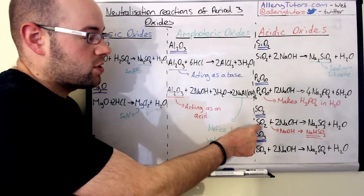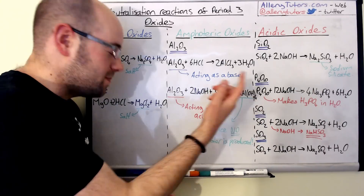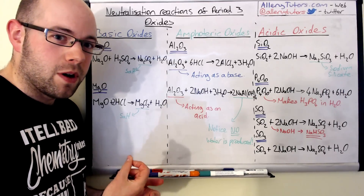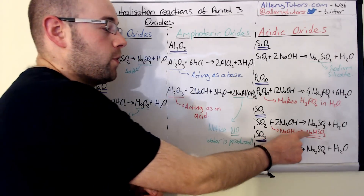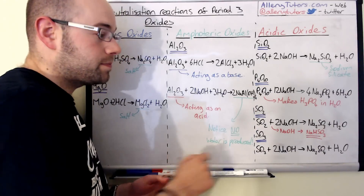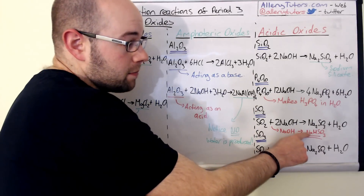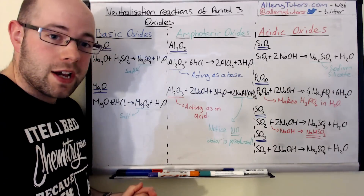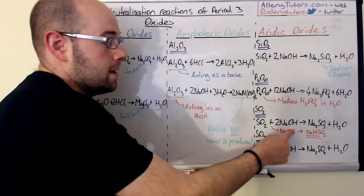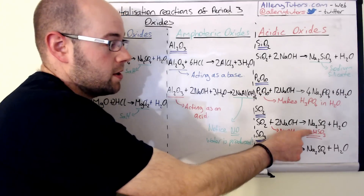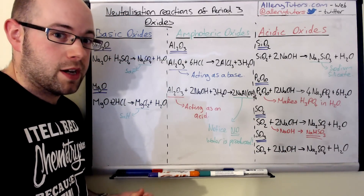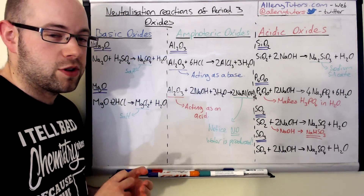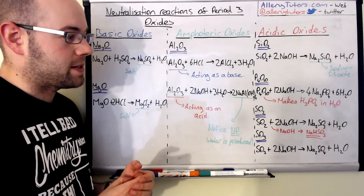If you react sulfur dioxide with just one mole of sodium hydroxide, you will form sodium hydrogen sulfite, NaHSO₃, and no water is produced in that reaction. Just make sure you know what the examiner is asking.